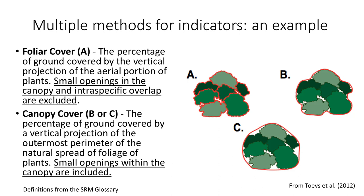For example, line point-intercept and continuous line intercept are both measures of cover but use different definitions. The line point-intercept method uses a foliar cover definition, where only exposed plant area is included in the cover calculation. Alternatively, the continuous line intercept method uses a total canopy cover definition, where any area within the perimeter of the plant counts toward the cover calculation. While in practice the difference may be small, it's an important distinction that may make data from the two methods incompatible, even though both are technically measures of cover.